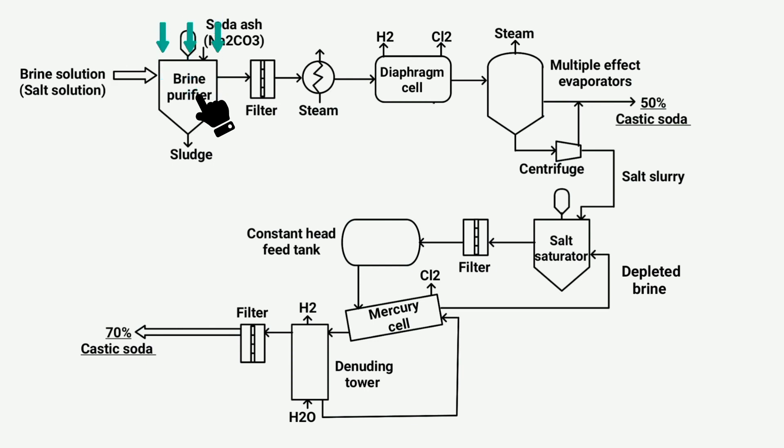soda ash is used to purify the brine solution by removing impurities like calcium, magnesium, and iron salts, which are impurities during caustic soda production. After the purification process, when the brine solution contains 25% to 28% salt, it is filtered to remove residual impurities using a filter.